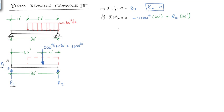And we can solve directly for RR, because that equals 0. So RR is equal to 4,000 pounds times 20 feet, divided by 30 feet, is equal to 2,666.7 pounds.